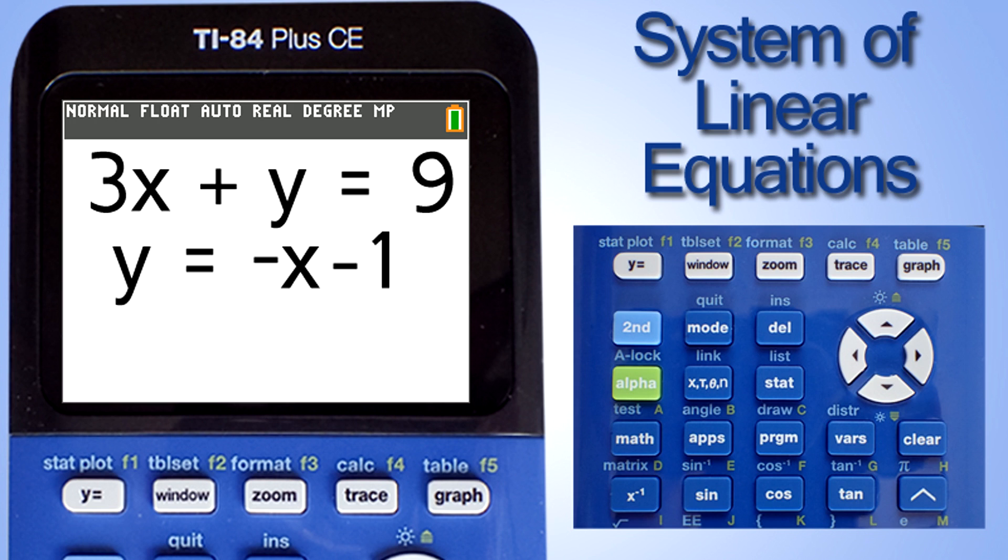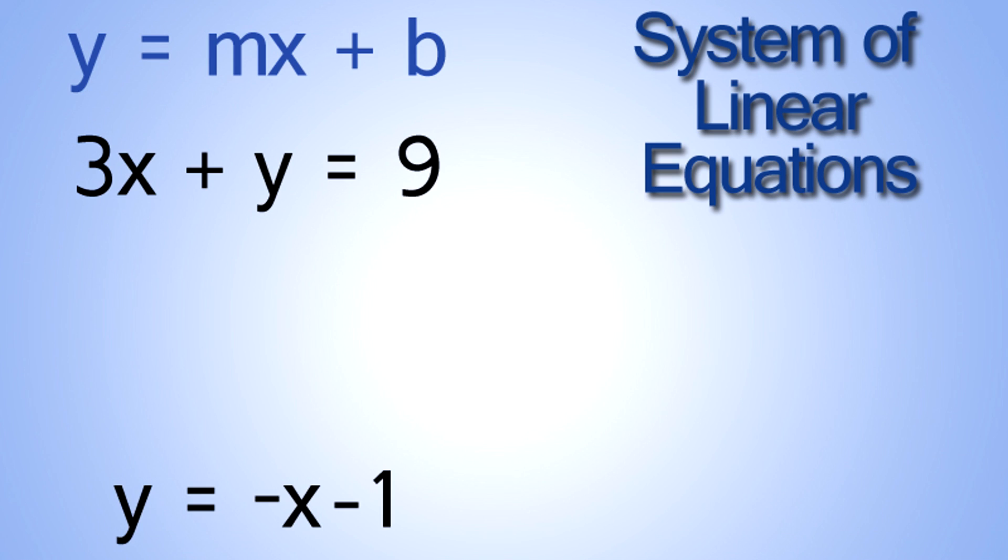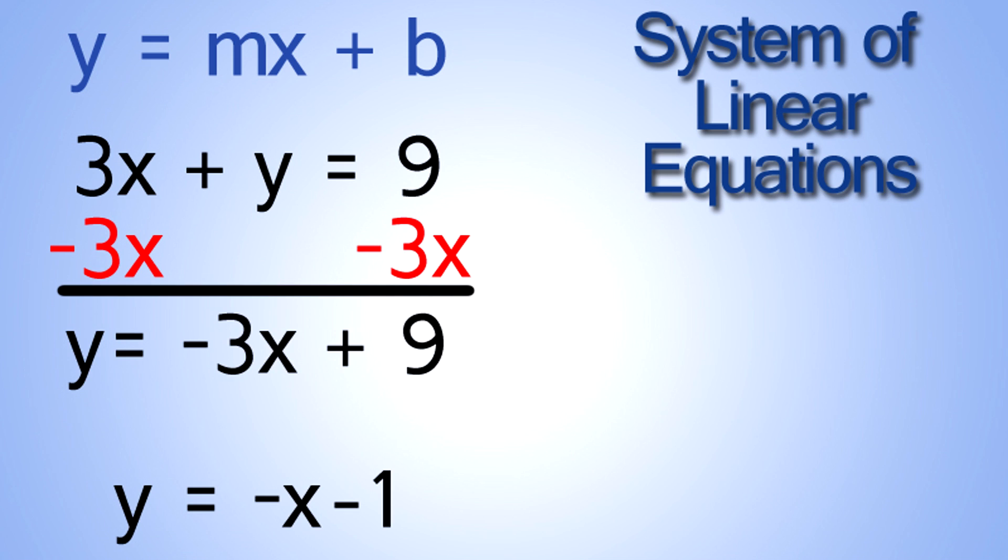First thing we need to do is make sure the linear equations are in the slope-intercept form of y equals mx plus b. So for this first equation, 3x plus y equals 9, we need to subtract negative 3x from both sides of the equals sign. That will give us y equals negative 3x plus 9, and this equation is now in the slope-intercept form of y equals mx plus b.